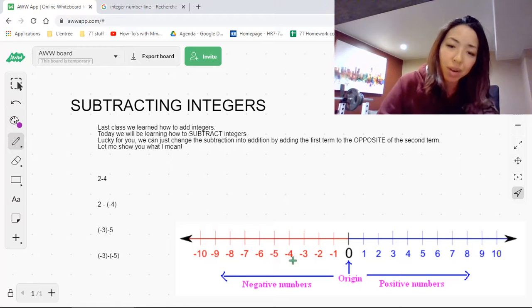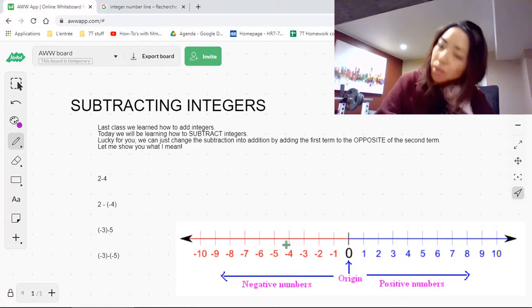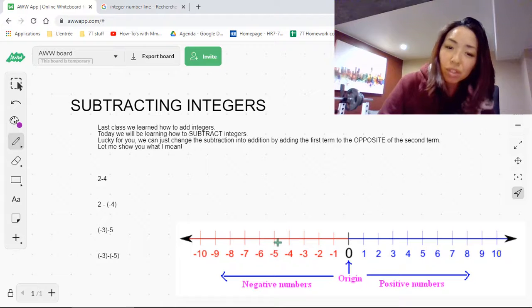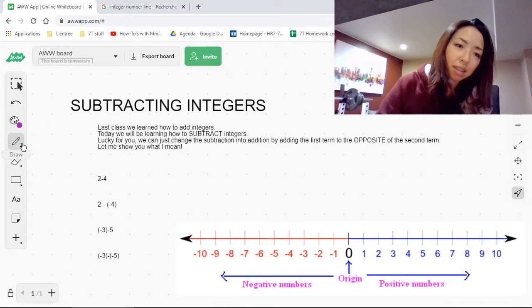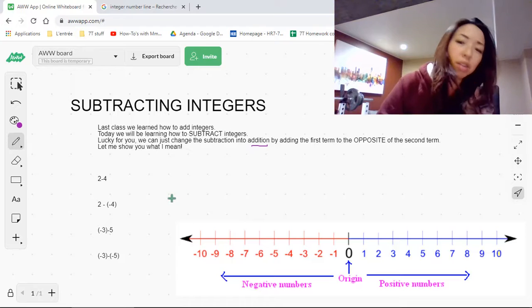So last class we talked about adding integers. I showed you, use the number line. First you plot the first term, say it's negative 5, and then you move it to the right however many spaces if it's a positive number that you're adding, or if you're adding a negative number, then you move it to the left. If you remember how to do that, then subtracting will be easy. The reason being, we're just going to change our subtraction into addition, and then you already know how to do addition.